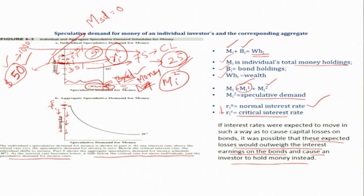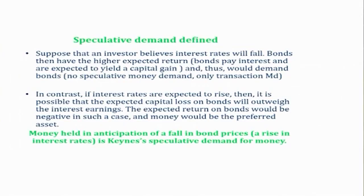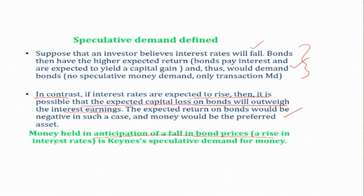To summarize: if an investor believes interest rates will fall, then bonds have higher expected return, and thus the investor demands bonds — there is no speculative demand for money, only transaction money demand. In contrast, if interest rates are expected to rise, the expected capital loss on bonds may outweigh interest earnings, making the expected return on bonds negative. In such a case, money becomes the preferred asset. So to restate the main definition: money held in anticipation of a fall in bond prices — that is, a rise in the rate of interest — is Keynes' speculative demand for money.